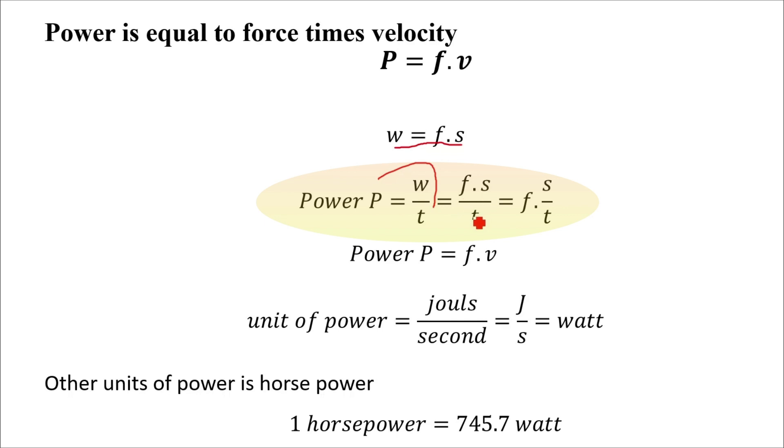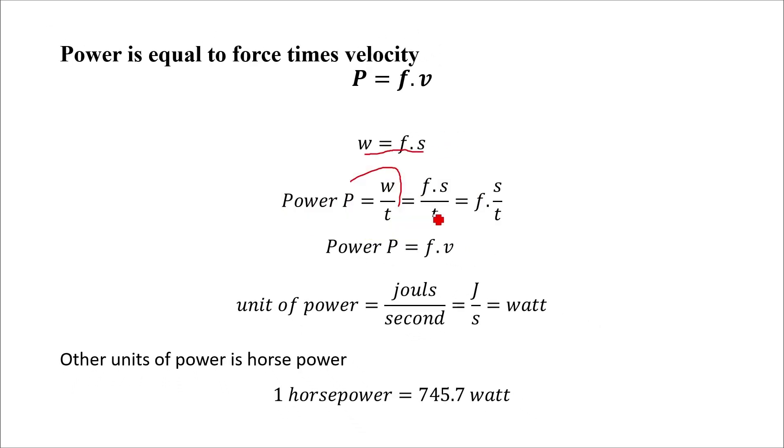where f is the force, s is the displacement, and t is the time. Rearranging this equation, we will get f into s divided by t, and s by t in this equation is the displacement per unit time, which is velocity.